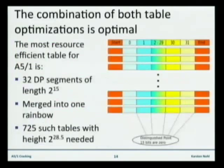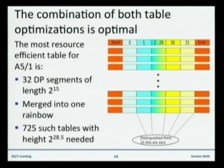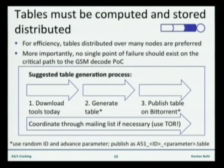And that's in fact what we did. For A5.1, we compute a distinguished point rainbow table, where we compute a distinguished point not once but 32 times, and each time we hit a distinguished point we change the color. This draws in the best features of both approaches. The number 32 was found through an optimization problem and seems optimal for the 2 to the 57 key space. From all that's known cryptographically, this is the best possible pre-computation attack on A5.1.